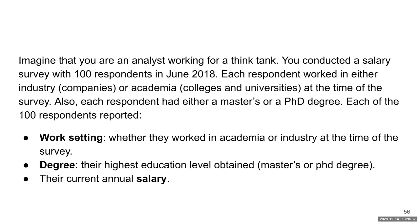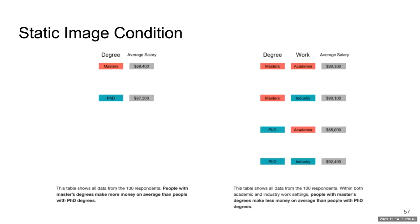Next, we're going to talk about the second experiment, which is about table-based datamations. Participants saw the exact same prompt describing the survey about education, work setting and salary. Then participants saw a static image, which is a table that shows on average how much folks with master's degrees make compared to survey respondents with PhDs. Then on the right table, it shows the same information broken out with average salaries by degree and workplace, whether you work in academia or industry.